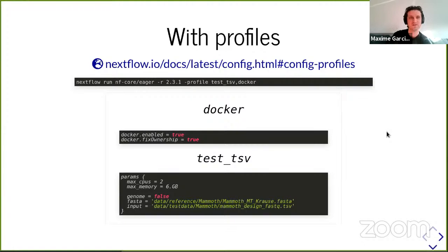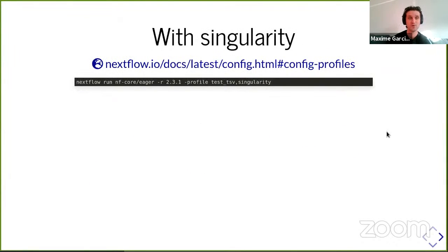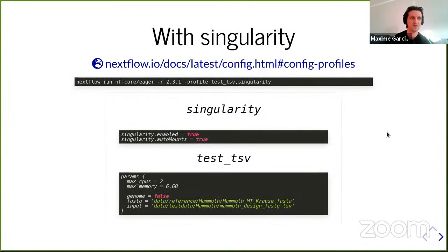The whole beauty with Nextflow and with profiles is that if I want to run the same command line but instead of Docker I want to use Singularity, I just need to specify the profile singularity instead of the profile docker. And within all nf-core pipelines, the profile singularity is already defined and explains how to use Singularity. So I just have to change the profile, and voilà, it's working. This is why I like Nextflow and nf-core — it's easy.